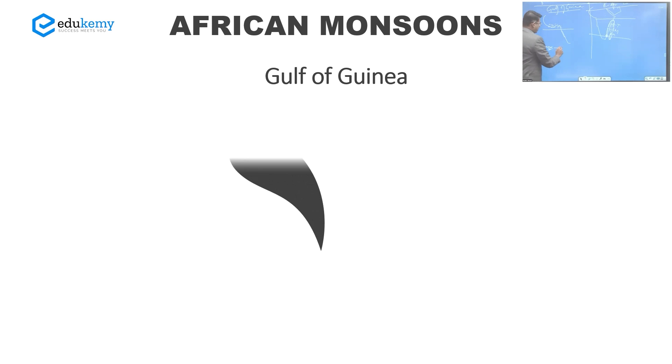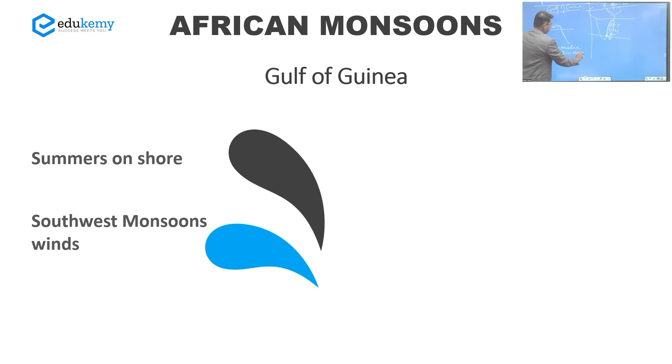So Gulf of Guinea - what happens? In summers we have onshore southwest monsoons. Sahara low pressure drags the winds.